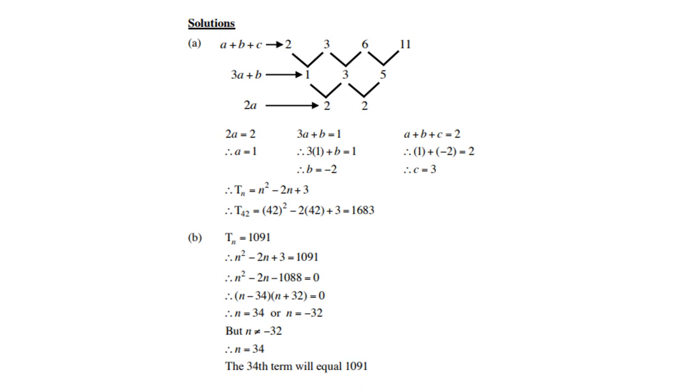The first step is to write down the sequence 2, 3, 6, 11, and we also call it A plus B plus C. Then the first difference, which we call 3A plus B, comes from 3 minus 2, which is 1, 6 minus 3, which is 3.